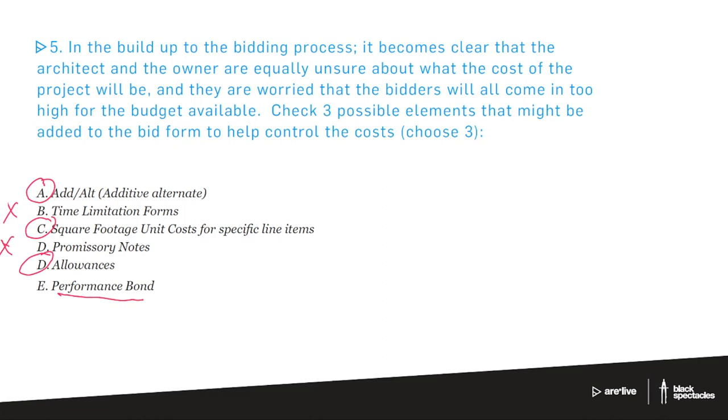So some other ones, the square footage unit costs for specific line items, that would be an example like, this community center would be awesome if we had terrazzo floors. They'd be durable forever. It would just be, it's a great way to do it. If you can afford it, it's going to be the absolute best. But terrazzo floors, those are going to be a lot more expensive than say a vinyl tile floor. So you might put the terrazzo or you might put the vinyl tile in and then ask for, but what if we did terrazzo? What per square foot cost would you give us if we put terrazzo in? And then that way down the road, if we choose a bidder, they can't later come up with some outrageous price for the terrazzo because they've already put it into their bid response.